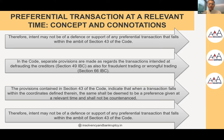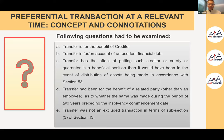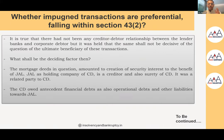The Supreme Court reiterated: subsection 2 and subsection 4 are positive sections, subsection 3 is the negative section. The questions to be examined are: whether the transfer is for the benefit of a creditor, whether it is on account of antecedent financial debt, whether the effect puts the creditor/surety/grantor in a more beneficial position than distribution under Section 53, whether the transfer was to a related party other than an employee, and whether the transfer was not an excluded transaction under subsection 3.